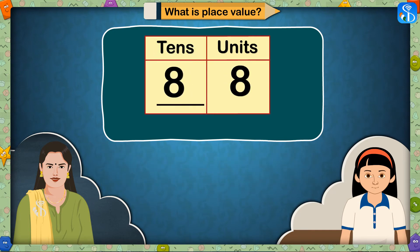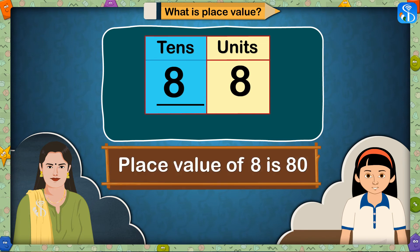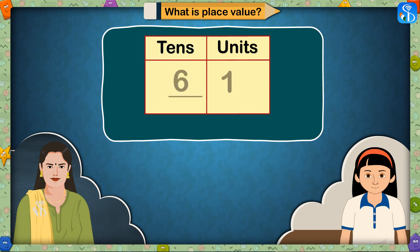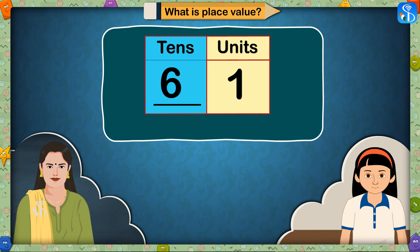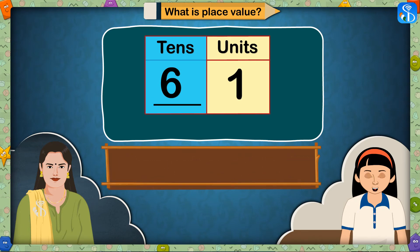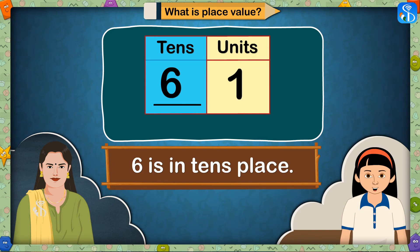Can you tell me the place value of the first 8 in 88? The place value of the first 8 in 88 is 80, as it is in tens place. What is the place value of 6 in 61? The place value of 6 in 61 is 60, as 6 is in tens place.